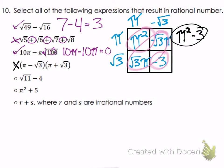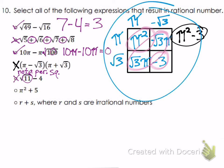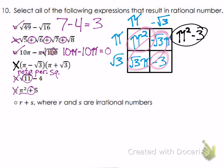Fifth: √11 minus 4. Because √11 is not a perfect square, the entire expression is irrational. The second-to-last example, for the same reason as the box problem, gives π² plus 5 — pi squared is irrational, so the result is irrational.